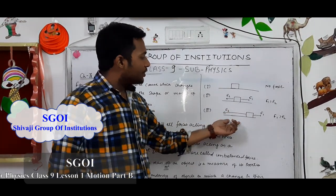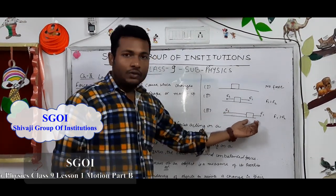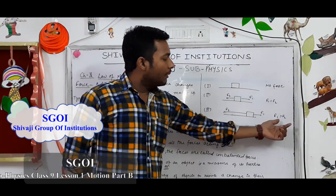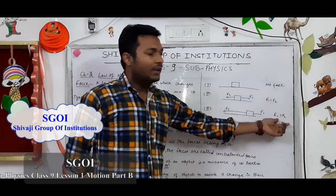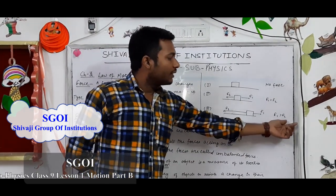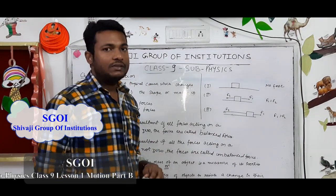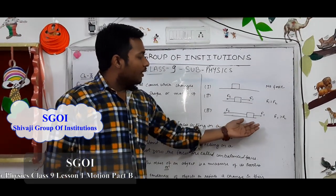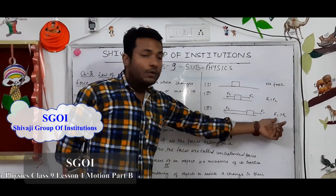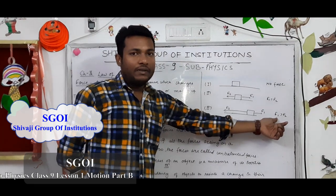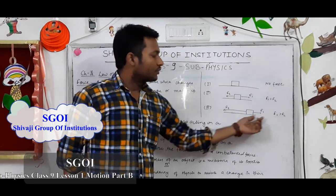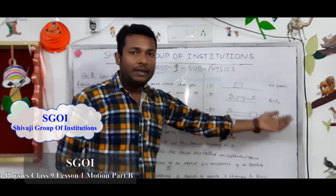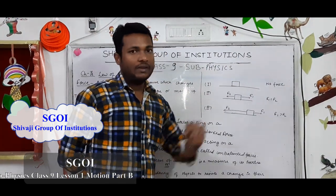In the third condition, there are also two forces acting on the body, but the magnitude of the first force F1 is greater than the magnitude of the second force F2. Since the magnitude of F1 is greater, the body will move towards the higher magnitude force, that is F1.